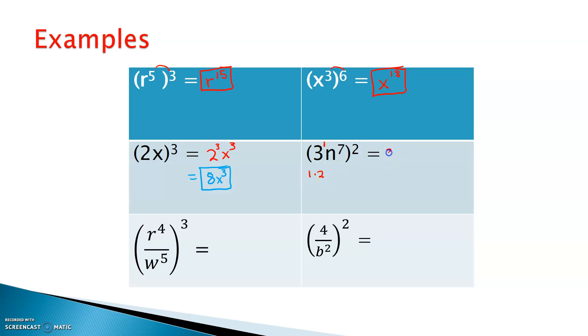So this should say three to the second power. And again, I'm going to have to do that same thing with n and the seven here. What do I do with the seven and the two? What's seven times two? That's going to give us 14.